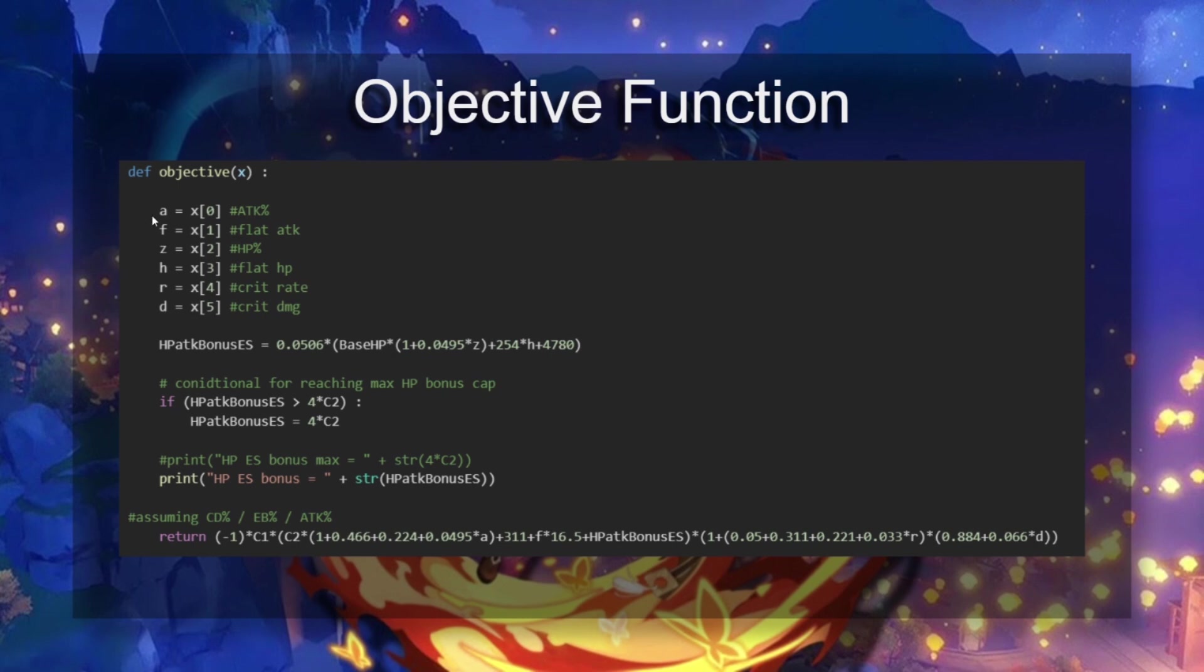So this is the objective function defined in Python. At the beginning here, we can see the different variables. What I'm passing into the objective function is a dictionary composed of six parts, which all contain the number of rolls that went into each substat. And then, based off of those, the program is going to optimize in order to get the highest value. It's going to fiddle around with these variables in order to get the highest value.